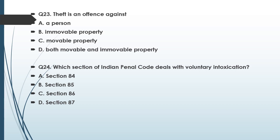Question number twenty-three: Theft is an offense against — option A: a person, option B: immovable property, option C: movable property, option D: both movable and immovable property. Option C is the correct answer — theft is an offense against movable property only. Extortion may be against either movable or immovable property. Robbery may be committed on immovable property only when it is in the form of extortion. But theft is specifically against movable property.